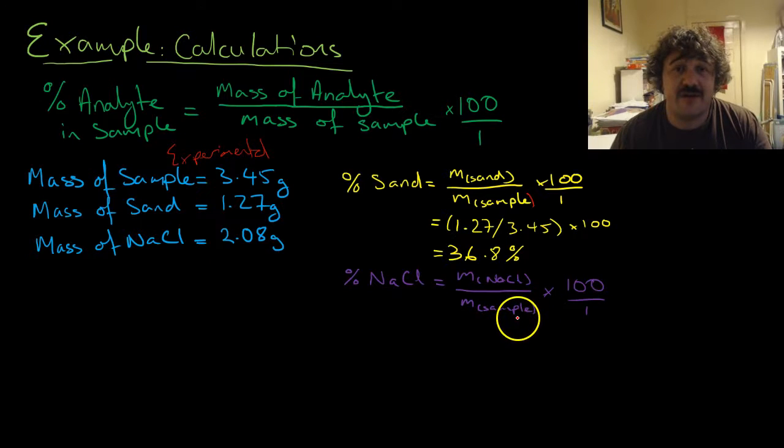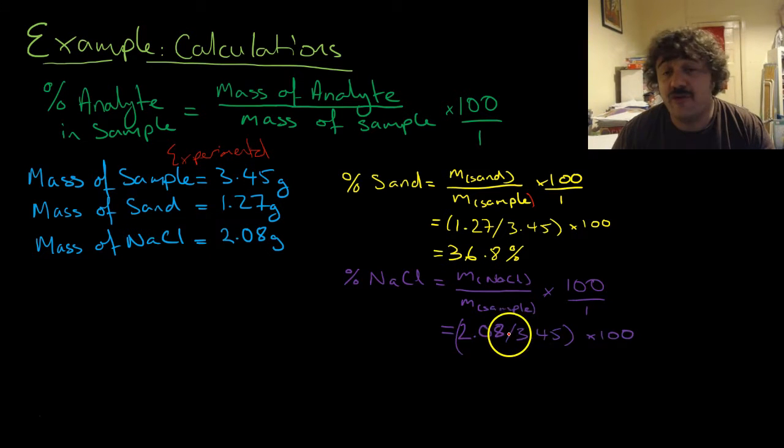Now we also want to look at the mass of sodium chloride. You'll see why we want to do this in a second. So the mass of sodium chloride divided by the mass of the sample is 2.08 divided by 3.45, times 100. This gives us 60.3%.